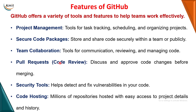GitHub offers many features as a social platform. First is project management — it helps keep track of changes and do modifications. Second is secure code packages — you can decide whether your code is public or private. Third is team collaboration — it helps developers collaborate, communicate, and share code through pull requests. You can pull the latest version from GitHub into your local system. It also provides security features and code hosting, allowing projects from different developers and locations to be accessed. This concludes the introduction to Git and GitHub.